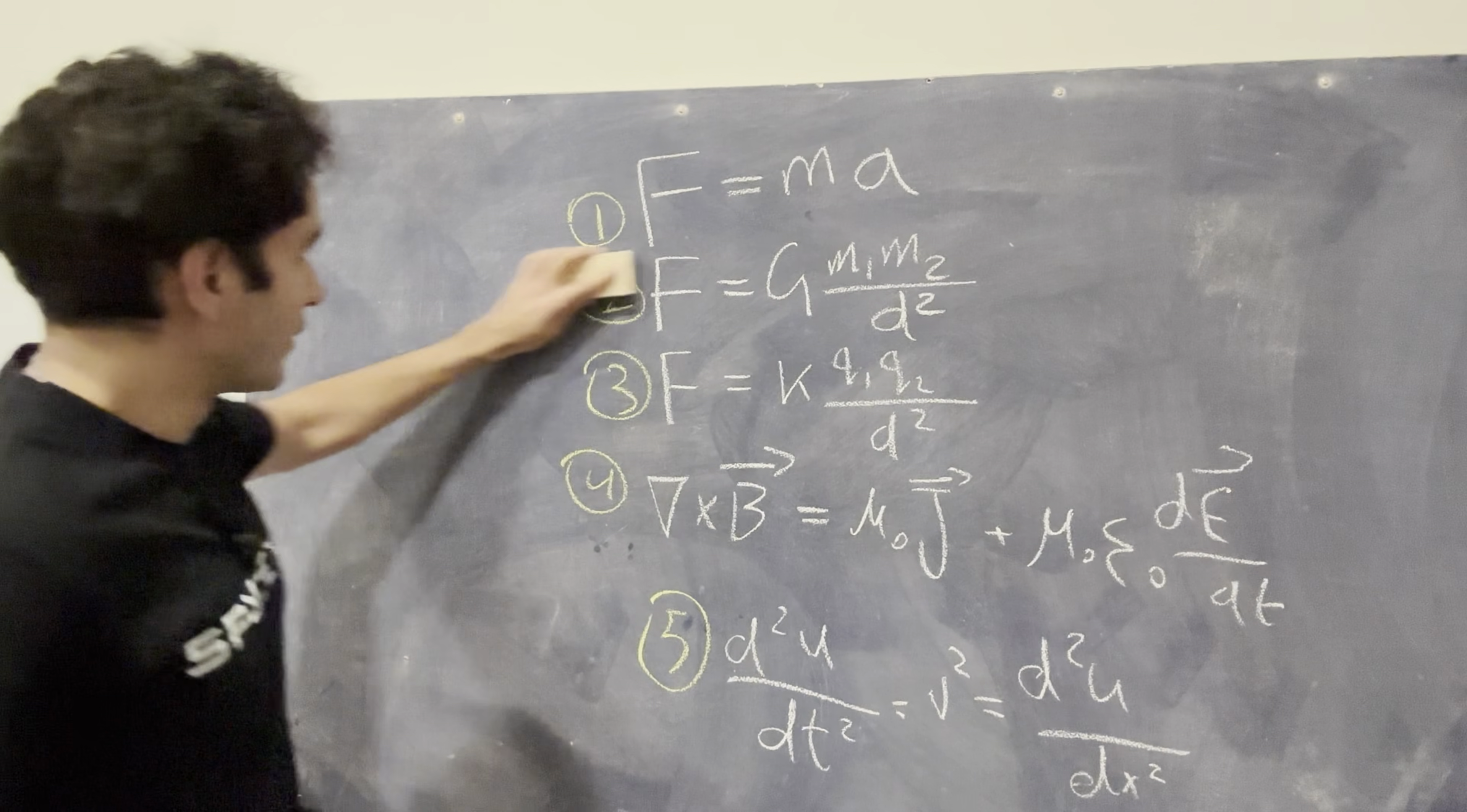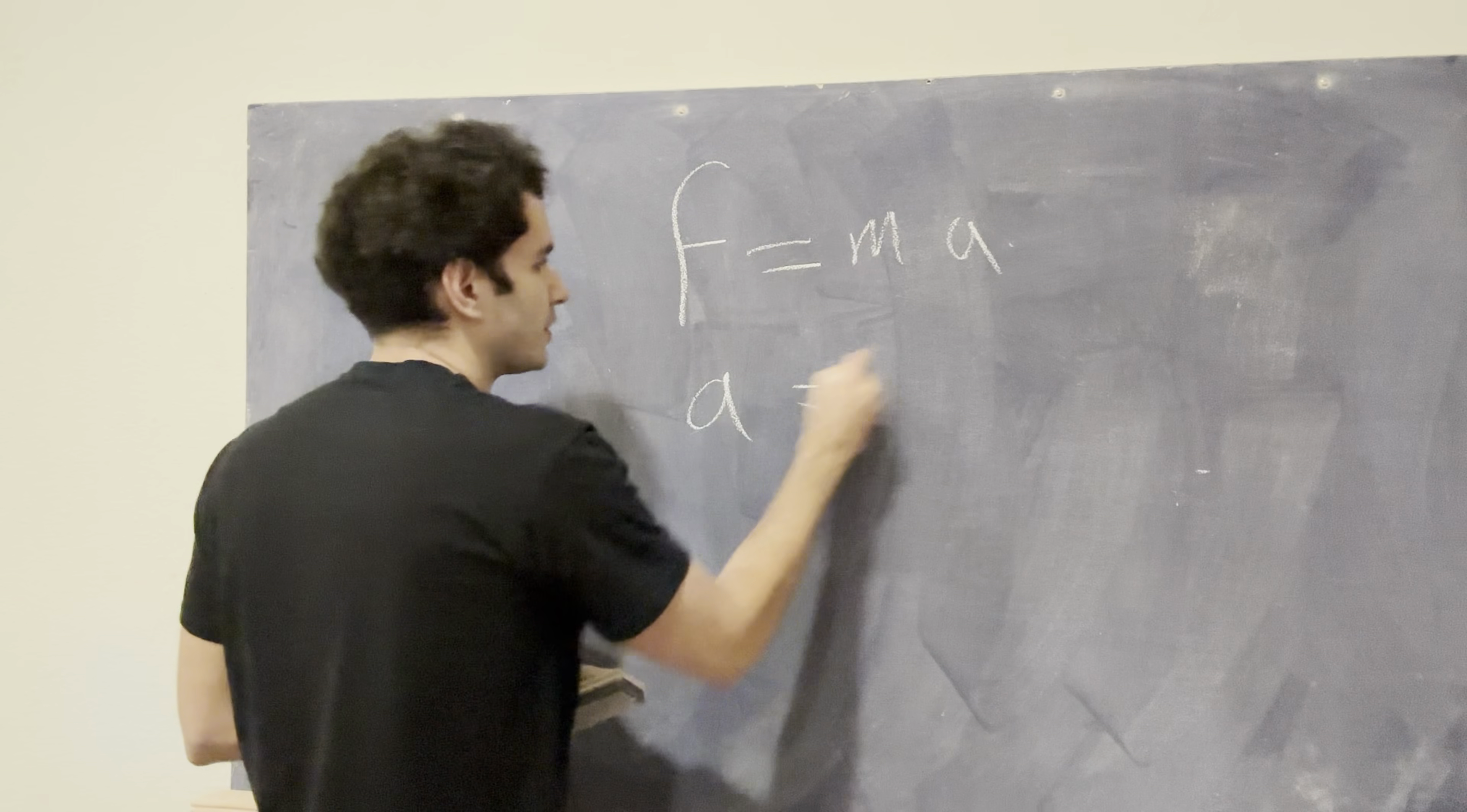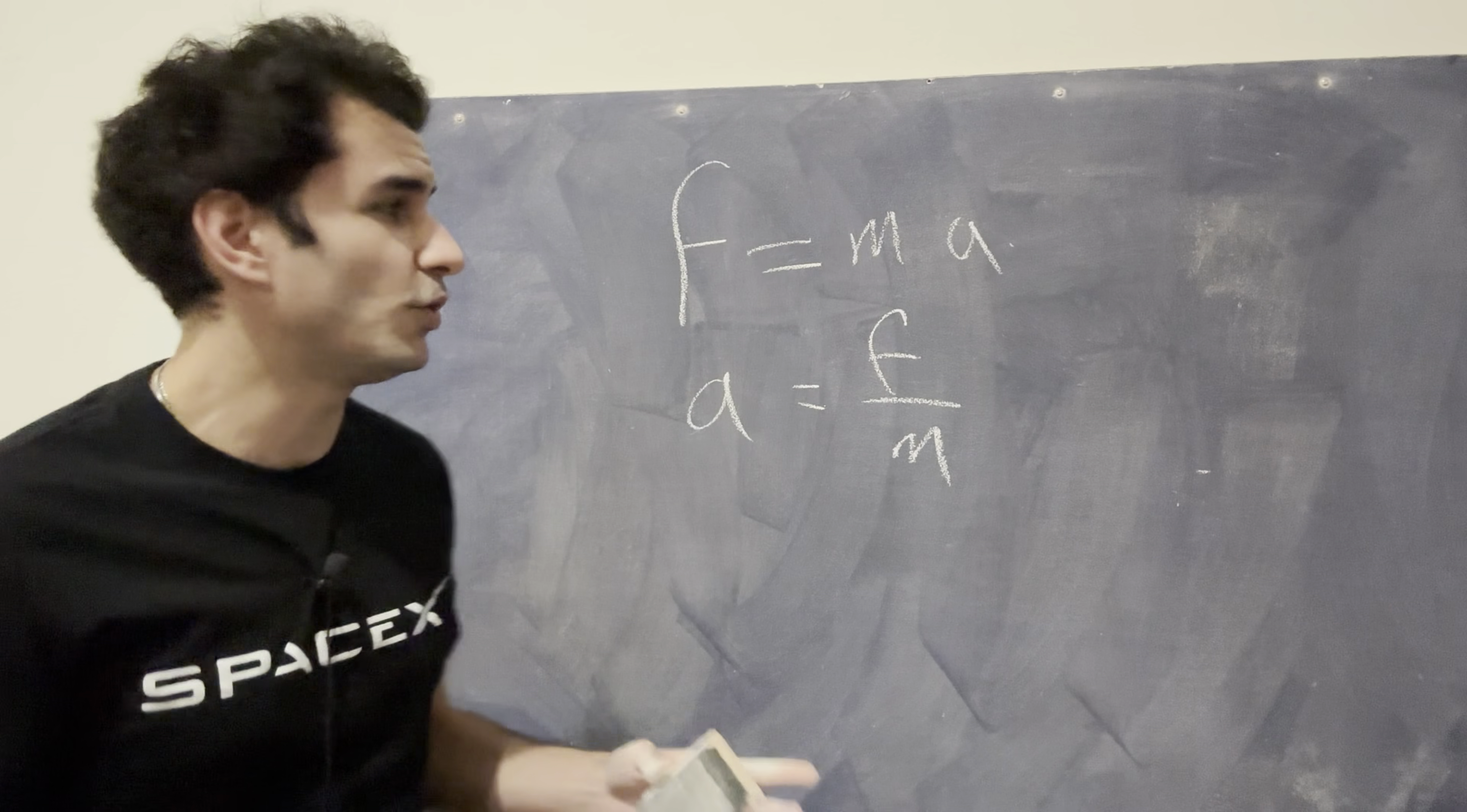So the very first thing I want to talk about is F=ma. And this equation is actually written wrong. It should not be written as F=ma. It should be written as a=F/m. And this is probably the most important starting point because this is the cause and effect equation.